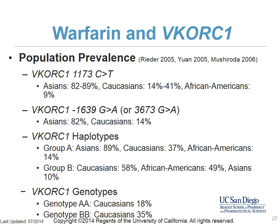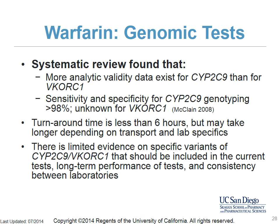Each person carries two haplotypes, which together comprise the genotype. Among Caucasians, genotype AA, which leads to a lower warfarin requirement, occurs in about 18%. Genotype BB, which results in a higher warfarin requirement, occurs in 35% of Caucasians. Many genomic tests have been approved for detecting variants in CYP2C9 and VKORC1. A recent study compared four genotyping platforms and all four demonstrated greater than 95% accuracy for identifying CYP2C9*2 and *3, as well as the VKORC1 -1639 or 1173 sequences.